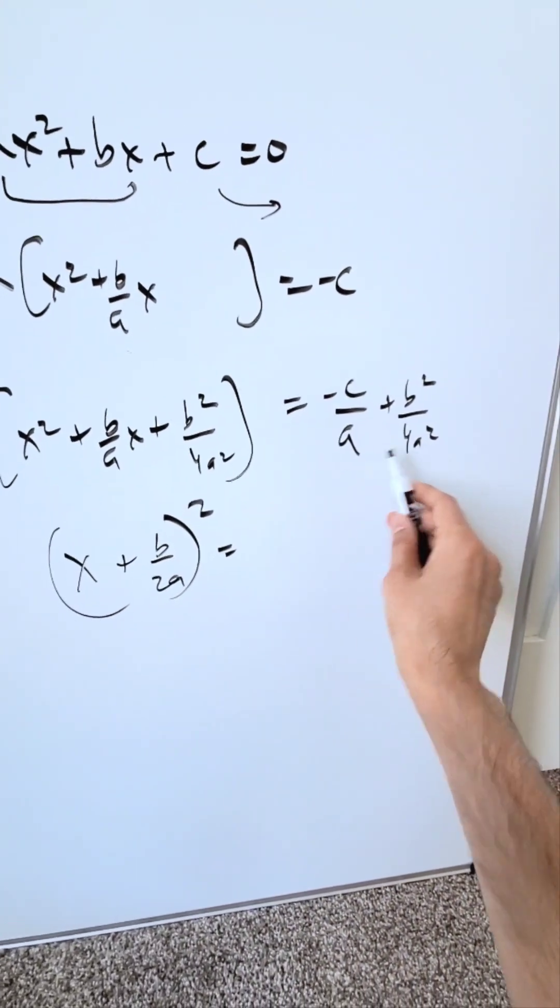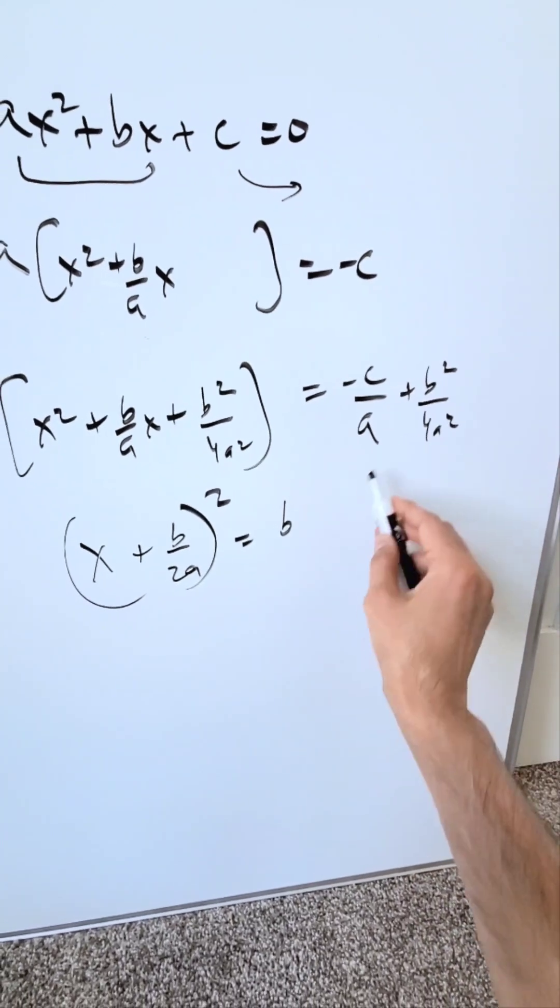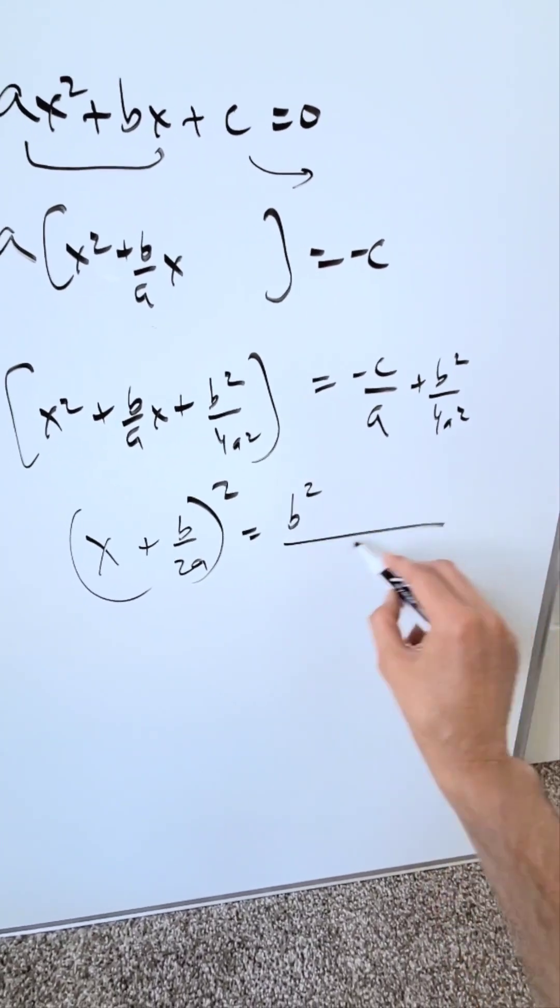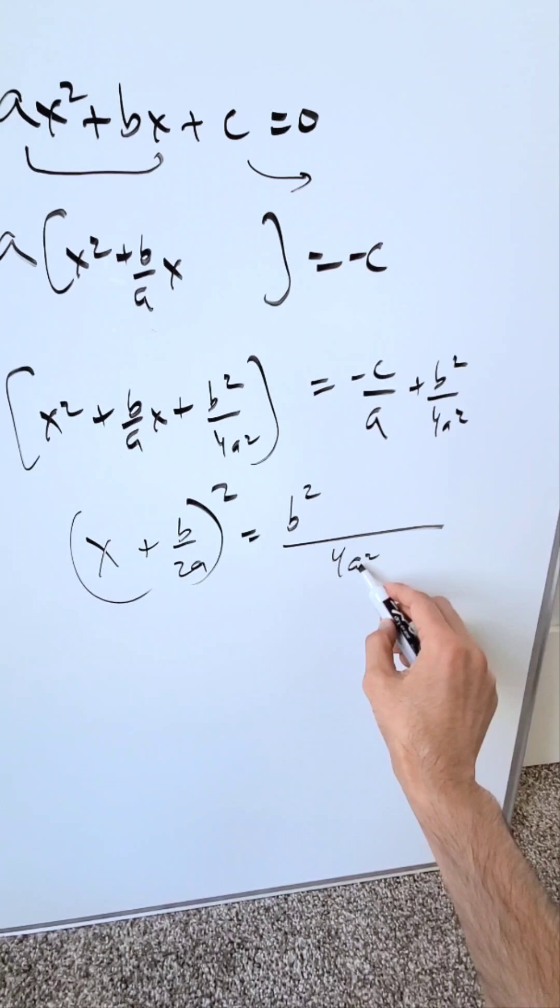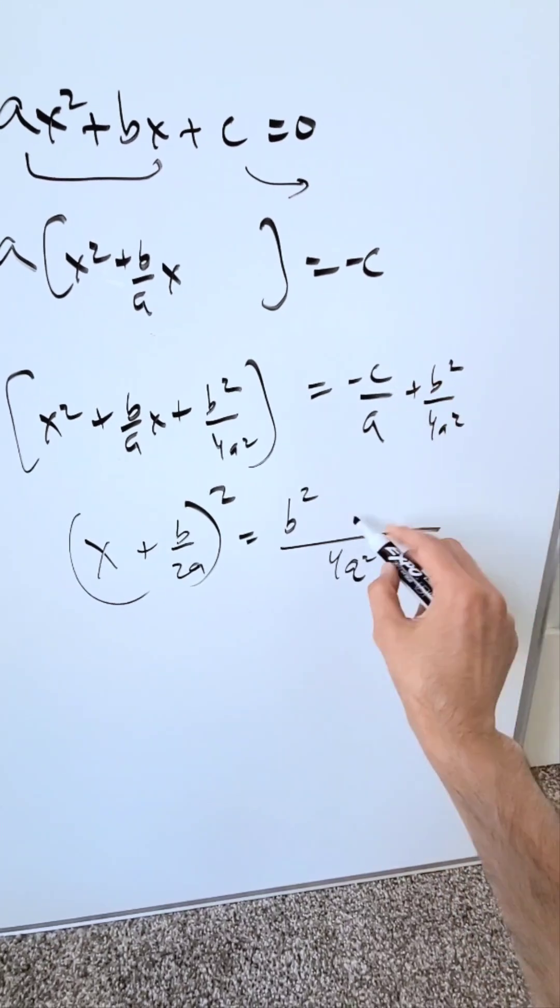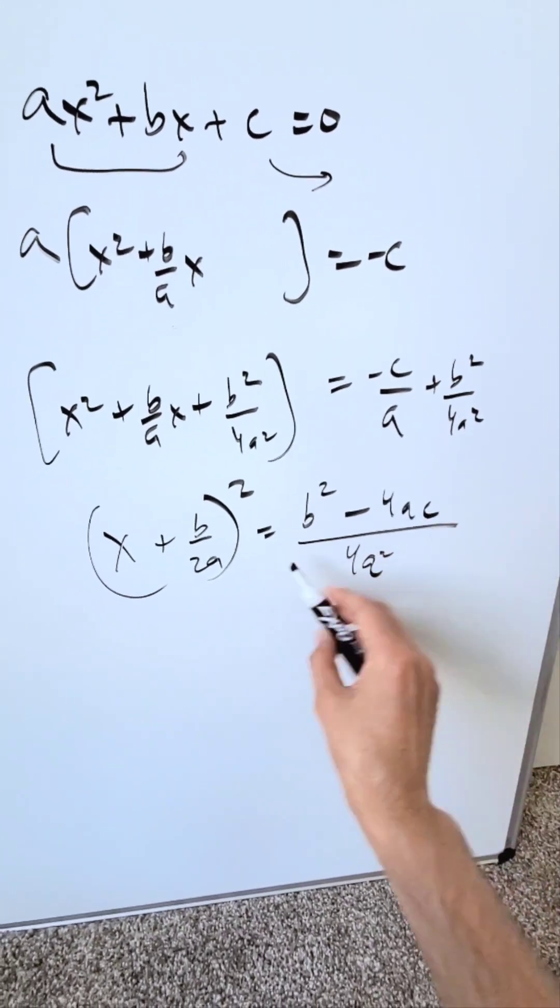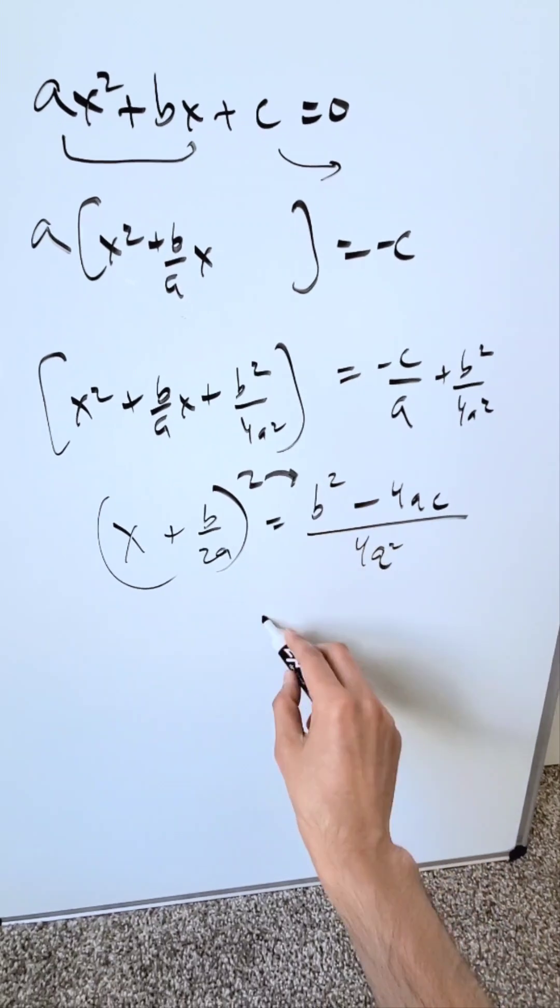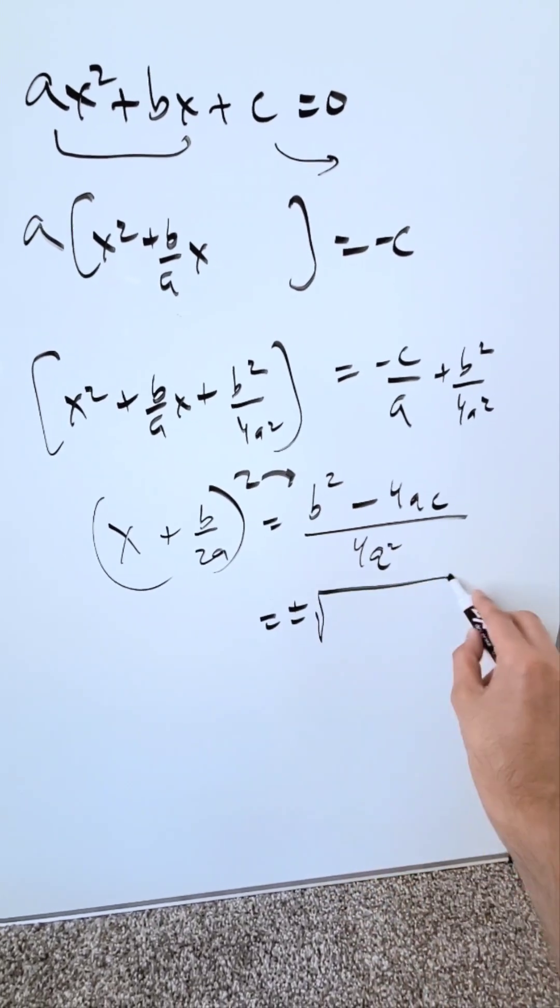Rewrite this with the positive term first and a common denominator 4a squared. You'll have b squared over 4a squared. a goes in that 4a squared. 4a times multiply with that minus c gives you minus 4ac. Push this exponent on the other side. You'll bring in your plus and minus square root.